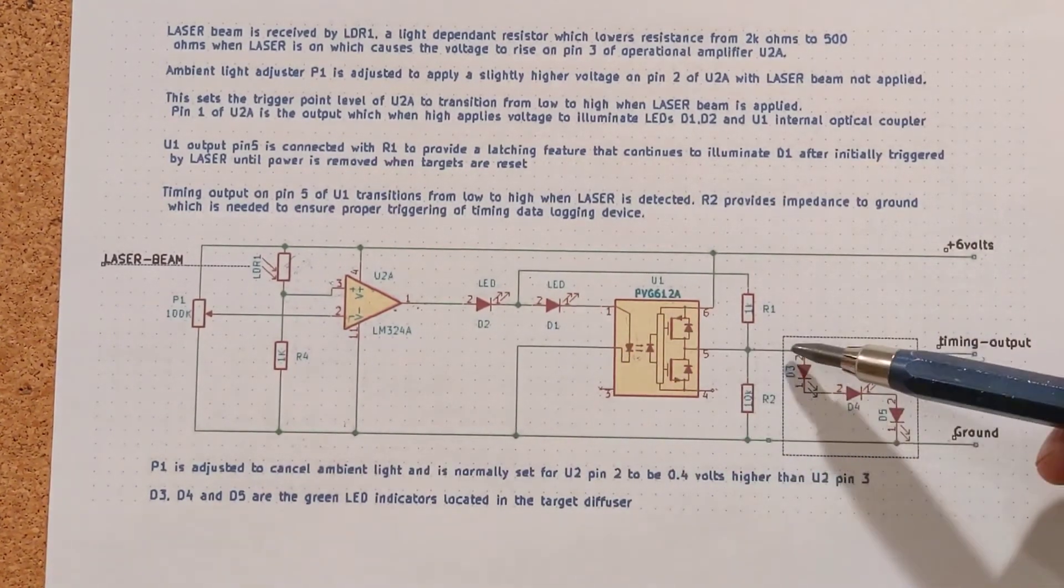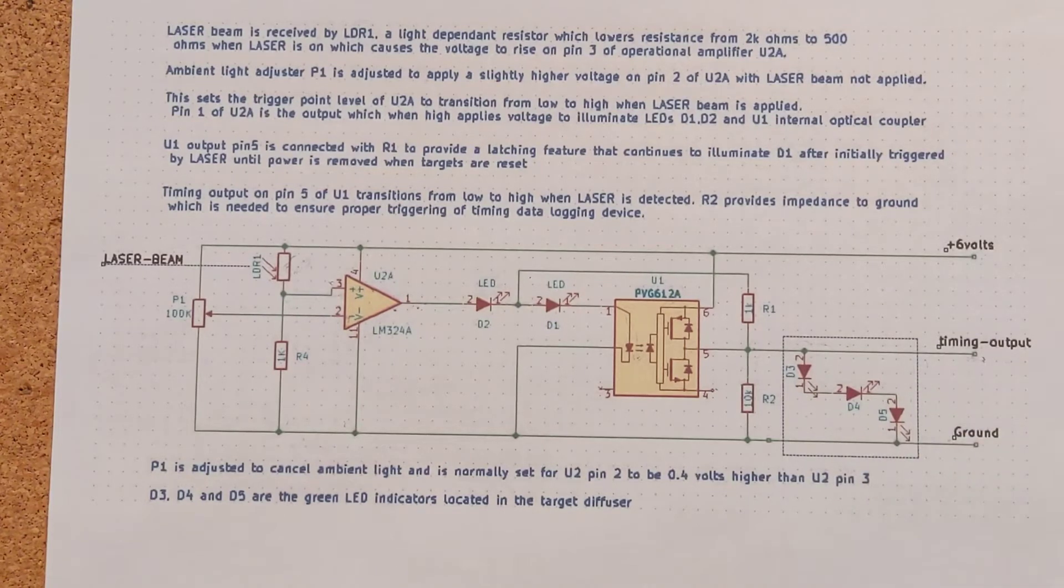There's also a bank of LEDs here on the output. These are super bright green LEDs and they'll be mounted inside the diffuser target. They'll provide visual feedback to the shooter when they've struck the target so they can move on to the next target.